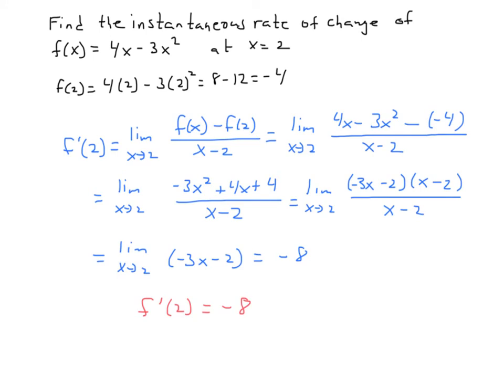Now another thing you have with this is the instantaneous rate of change. Here's how it works: if I drive from point A to point B, and the distance is exactly 60 miles done in exactly one hour, you would say I'm traveling at 60 miles per hour — that is the average rate of change. But am I always traveling at 60 miles per hour? No — there are times when I'm going faster and times when I'm going slower. The instantaneous rate of change looks at what's happening at that exact instant. That instantaneous rate of change is also the derivative.